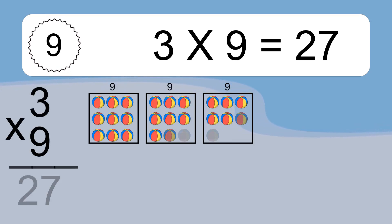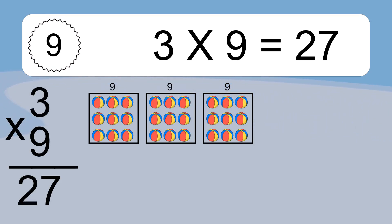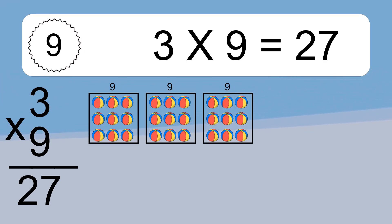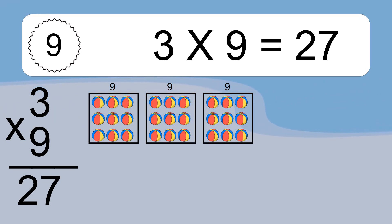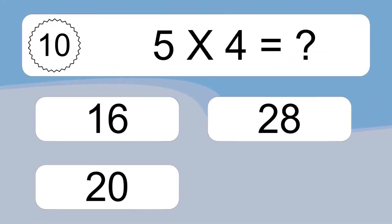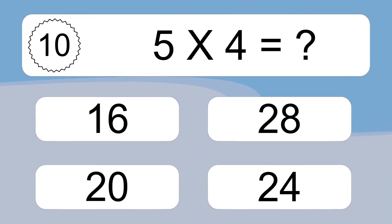3 times 9 equals what? Three times nine equals twenty-seven. We have three boxes and each box has nine colorful balls inside. If you count all the balls in all the boxes together, you will have three times nine balls. This equals twenty-seven balls.